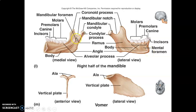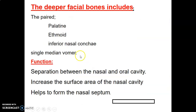The mandibular foramen is for the inferior alveolar nerve, which is a division of the mandibular nerve. The deeper facial bones include the palatine, ethmoid, the conchae in the nose, and the vomer.